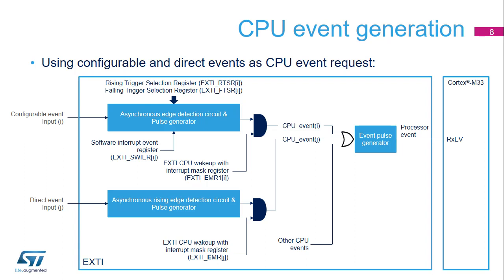The registers used to mask the generation of events are different from the ones used to mask the generation of interrupts: EXTI_EMR instead of EXTI_IMR. Note that unlike interrupt requests, the pending bit corresponding to the peripheral event line is not set.